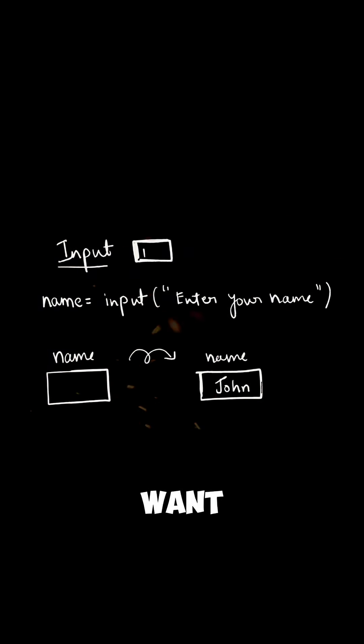Next we have input. Suppose you want to know the name of your friend via code. All you have to do is write input enter your name, and whatever your friend inputs, it will be stored in the name variable.